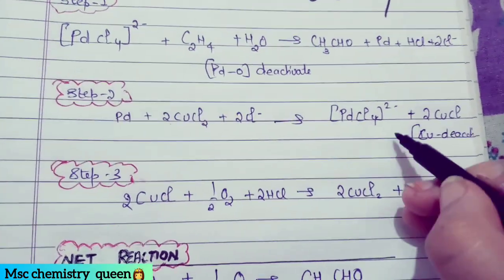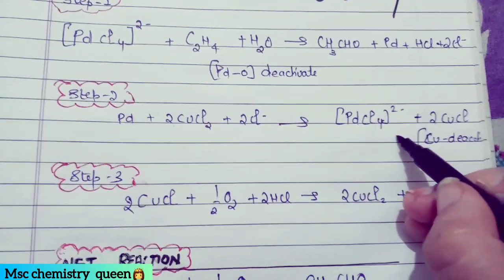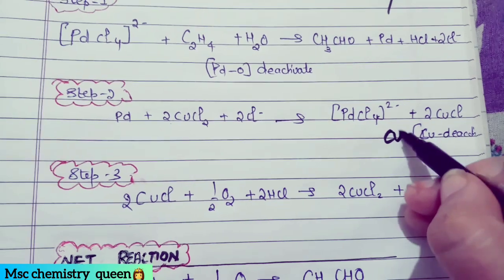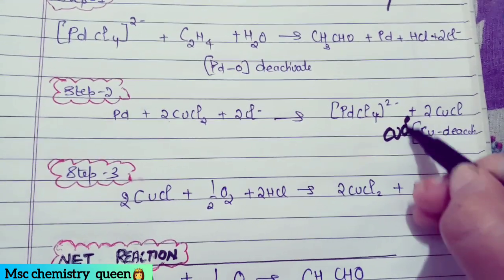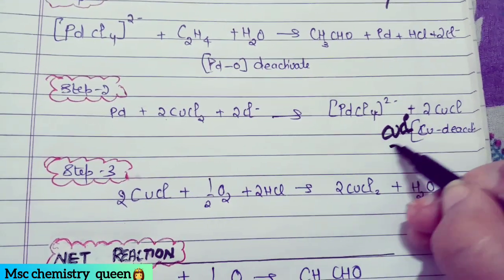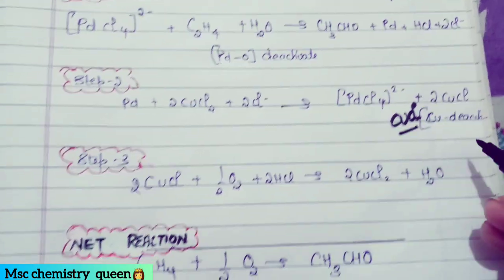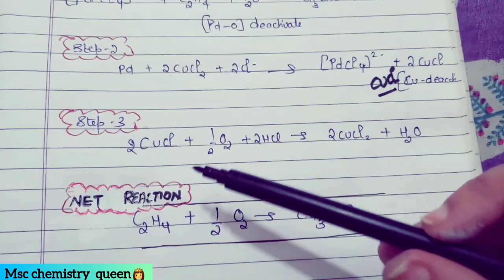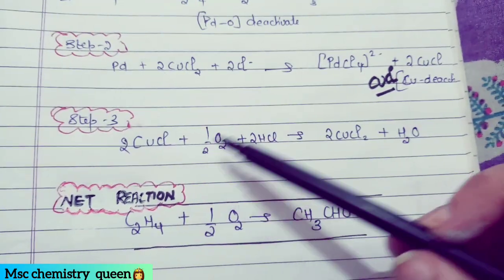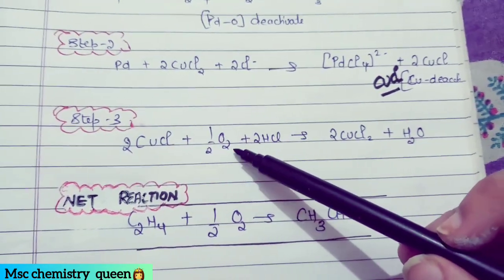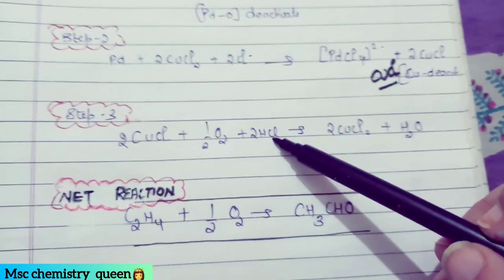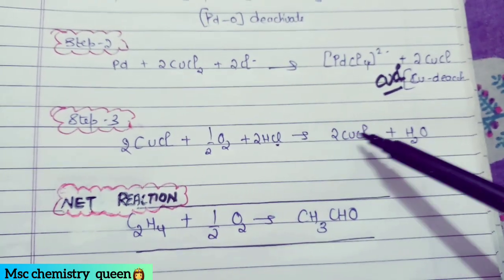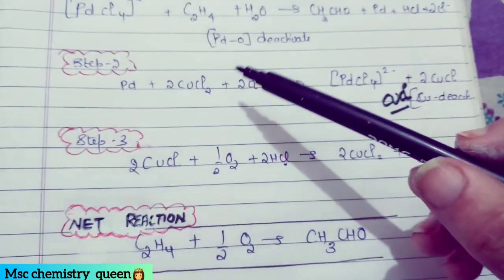In step 2, we add palladium chloride plus 2 CuCl₂ — this activates the copper chloride which was deactivated. In step 3, we add oxygen and 2 HCl, which reactivates copper dichloride to CuCl₂ plus water.